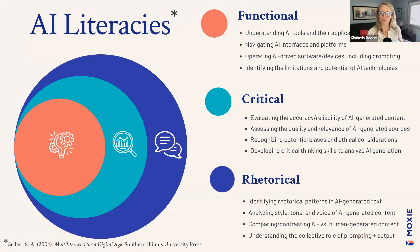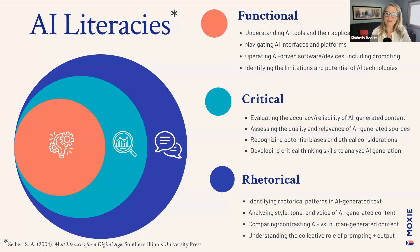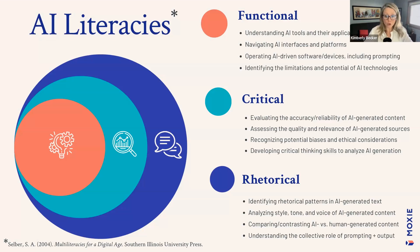Critical literacy is where it's really important to work with students to make sure they understand that accuracy and reliability are variable, that they need to assess the quality and relevance of AI output, and consider what the ethical options are — which AI to use and what biases exist. This is critical thinking specifically about AI, and you can't really do it without a functional understanding first. The largest piece of the framework is rhetorical — or communicative — which is using what you're doing with AI to communicate and take it to the next level in the real world, accomplishing some communicative goal and understanding the differences between human-generated and AI-generated content.